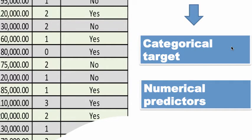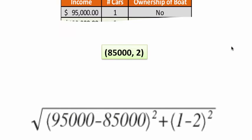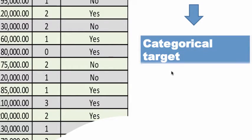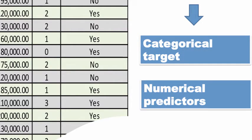Clearly, if you have to calculate distance, your predictor variables have to be numeric. After all, income and number of cars are both numeric. Unless your predictor variables are numeric, you cannot compute distance, and therefore KNN for classification requires numerical predictors. The predictor variables have to be numerical. And since we're talking about classification, the target variable has to be categorical — it has to be a factor. Otherwise you cannot apply KNN for classification.